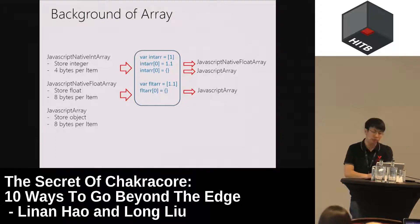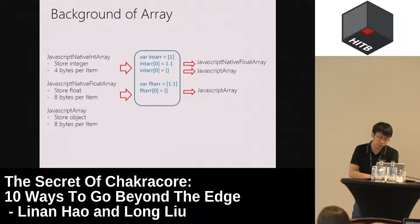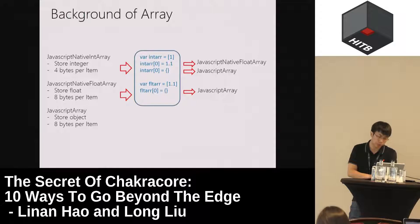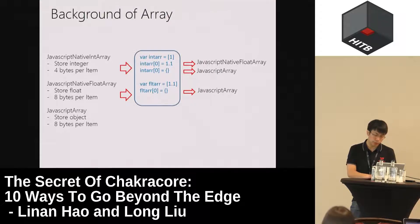We need to know some background about arrays. There are many types of arrays in Chakra. The stored size of JavaScript native int array items is 4 bytes, and the size of float array and var array items is 8 bytes. If we push an item into an array whose type is different, the array's type will change. For example, if we push a float item into an int array, the int array will change to a float array; push a var item into a float array, and that float array will be changed to a JavaScript array.